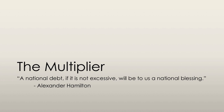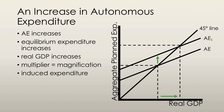Now let's get into the multiplier effect. When autonomous expenditure increases, aggregate expenditure increases, and so does equilibrium expenditure and real GDP. An increase in real GDP is larger than the change in autonomous expenditure, as illustrated by the green arrows on the screen.